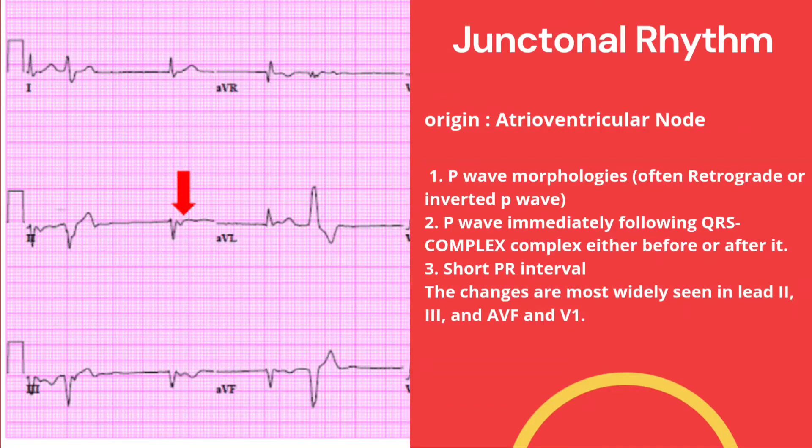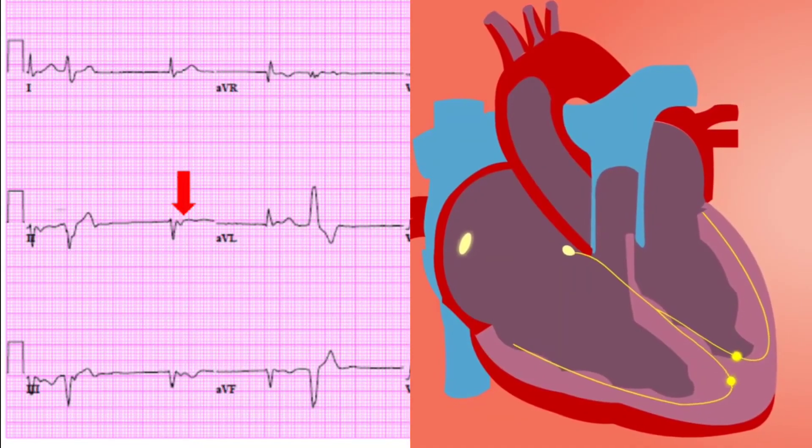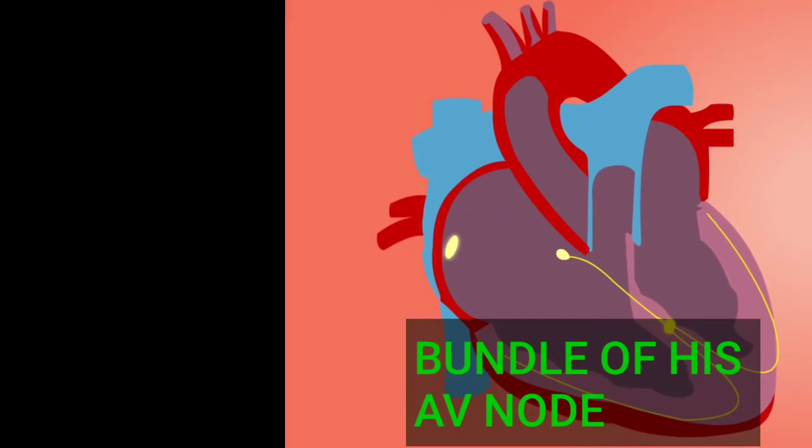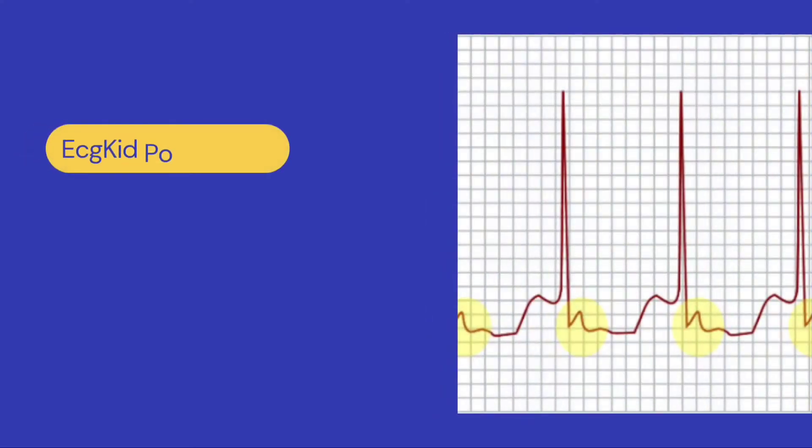The changes are most widely seen in leads II, III, aVF, and V1. The main anatomical structures involved are the bundle of His and AV node. Here are all the junctional rhythms you need to know.